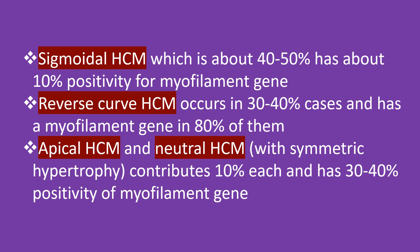Sigmoidal HCM, which accounts for about 40-50% of cases, has about 10% positivity for myofilament gene. Reverse curve HCM occurs in 30-40% of cases and has a myofilament gene mutation in 80% of them. Apical HCM and neutral HCM each contribute 10% and have 30-40% positivity of myofilament gene.